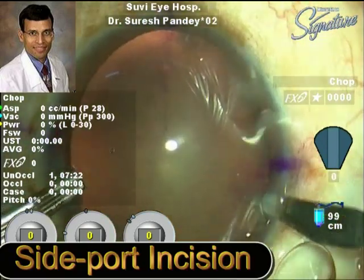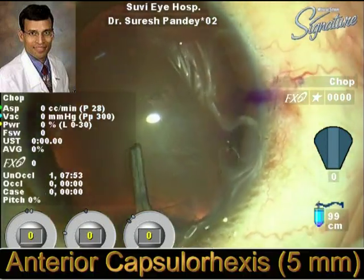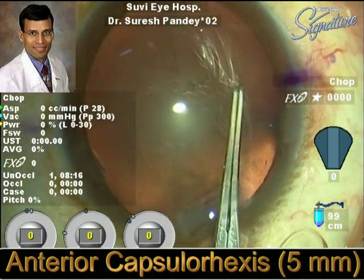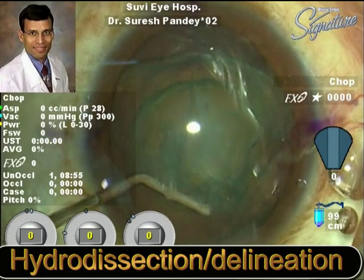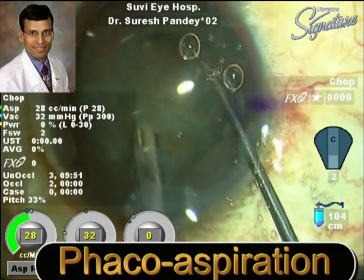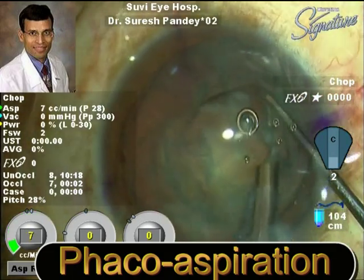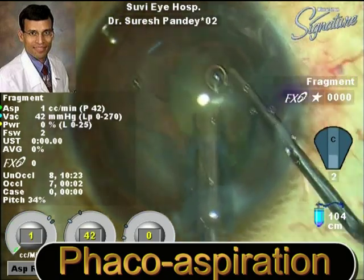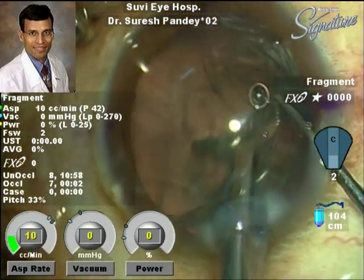The side port incision is being made and the main incision is made along the steep axis. Standard phacoemulsification surgery steps are performed: the continuous curvilinear capsulorhexis, followed by hydrodelineation and hydrodissection. This was a very soft cataract and it was removed using the AMO Signature phaco machine with the Ellips FX handpiece. Because of the cataract being very soft and the excellent fluidics, the cataract is being removed with an effective phaco time of zero.